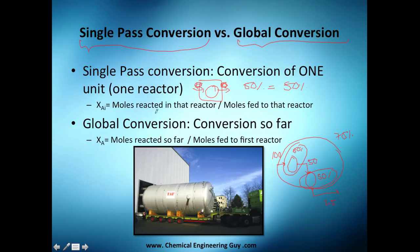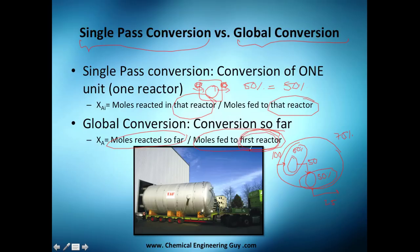Single pass conversion is moles reacted in that reactor divided by the moles fed to that reactor. Global conversion is moles reacted so far divided by the moles fed to the first reactor. So we always reference back to the first reactor. Taking 50 reacted versus 100 fed gives 50%, but taking 75 reacted versus 100 fed to the first reactor gives 75%.